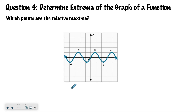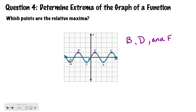Now I want you to look at this graph and determine which points are relative maxima. Maxima is another term you can use to represent multiple maximum points. Hopefully you said the relative maxima are B, D, and F, because they are the highest points — they're all at the same level. We still say relative maxima because we can't be certain the graph goes no higher. Those are the high points.